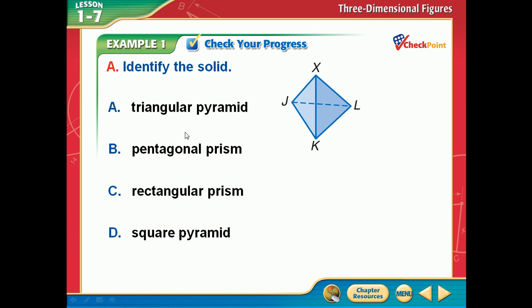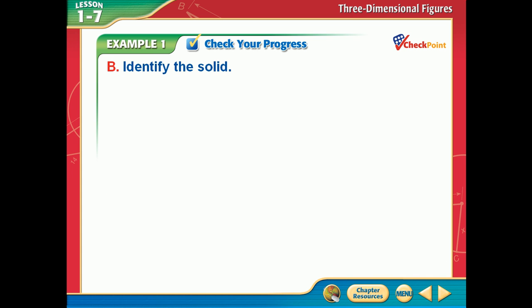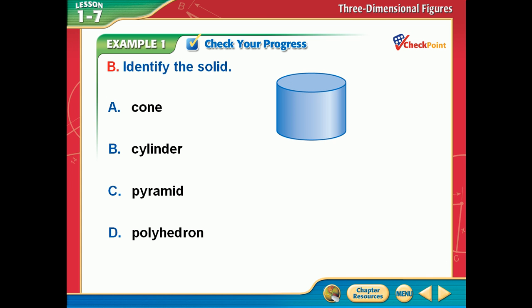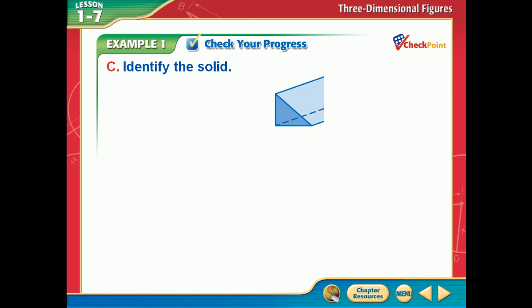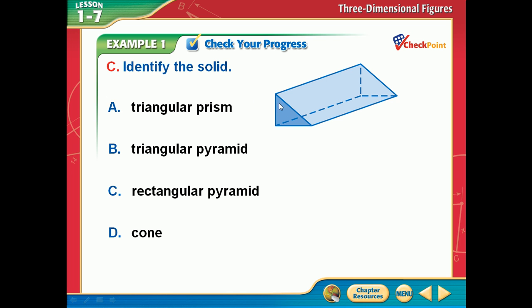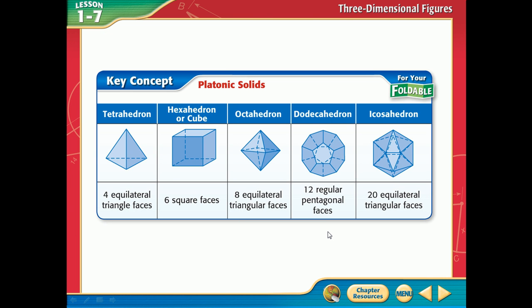This next one is basically the same thing except it looks kind of weird. The base is probably a triangle. What's this thing? A cylinder. And this one — the base would be a triangle — so it's a triangular prism or pyramid? Prism, because both bases are the same and it's flat on both of them.